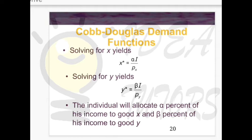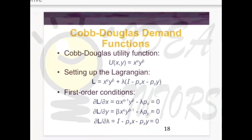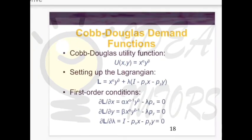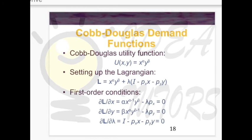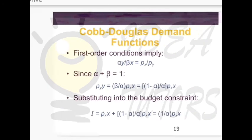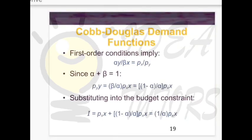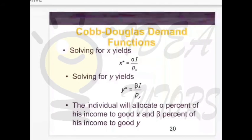The individual will allocate alpha percent of income to good X and beta percent of income to good Y. To summarize: if you have any utility function, form the Lagrange equation by writing that function, adding lambda times the budget constraint in brackets (income minus px*x minus py*y), take partial derivatives with respect to x, y, and lambda, solve for the quantity values, substitute into the budget equation, and find x-star and y-star — the quantities where the consumer achieves maximum utility.